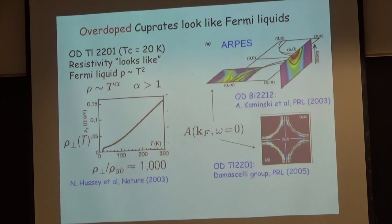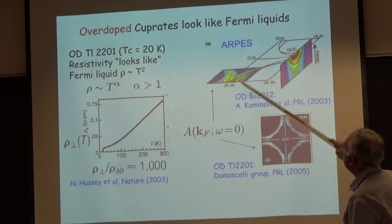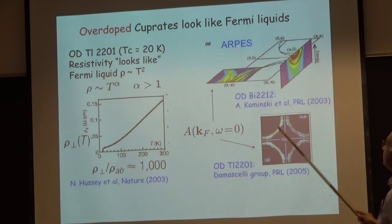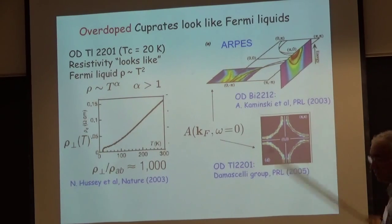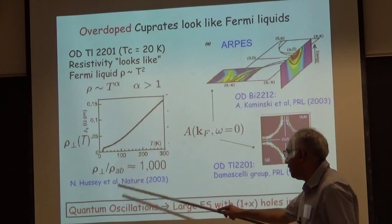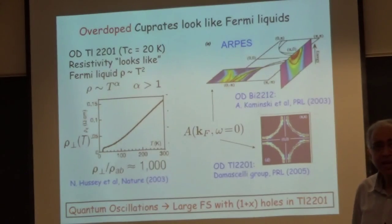Looking at ARPES of overdoped materials, you actually see a large Fermi surface. This is a nice picture showing a cut at the Fermi surface when you look at energy equals zero at the chemical potential. You see two Fermi surfaces because the Bi2212 material has two copper-oxygen layers per unit cell — it's a bi-layer material. You see the two bands and so on. But actually, the most convincing evidence that this is a Fermi liquid comes from quantum oscillations. We see a large Luttinger-count Fermi surface with 1+x holes.